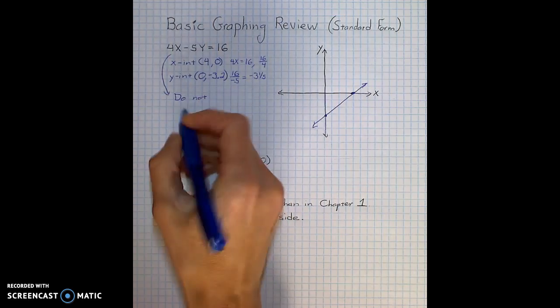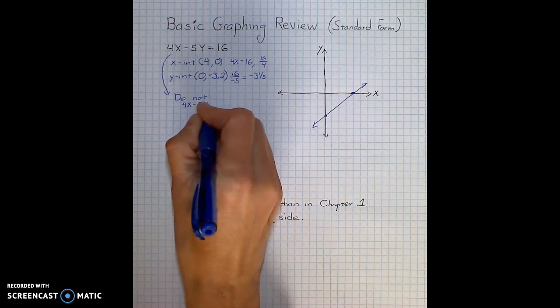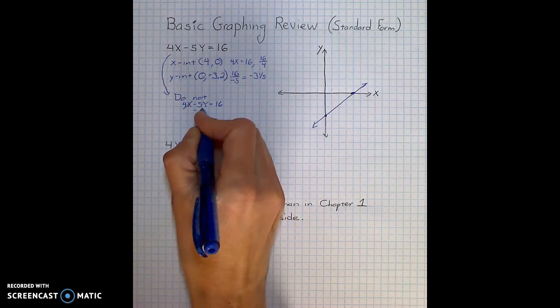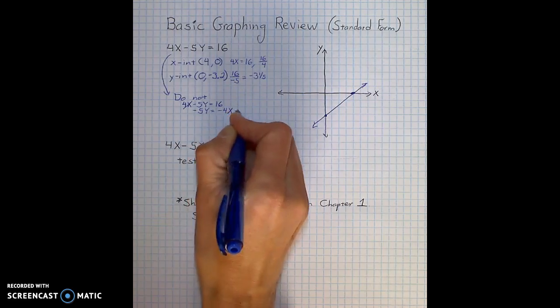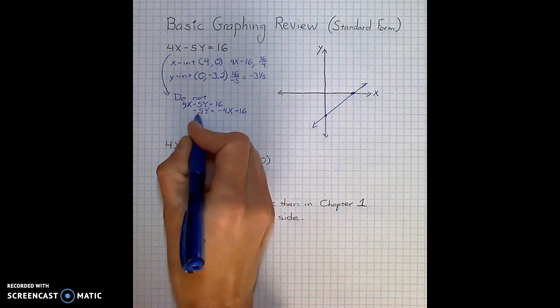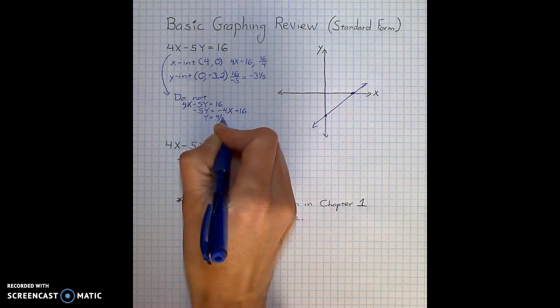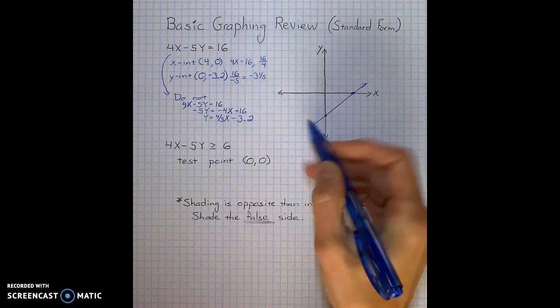So this is what his work would look like. He would subtract the 4x from the left. He would divide everything by negative 5. Then he would graph.